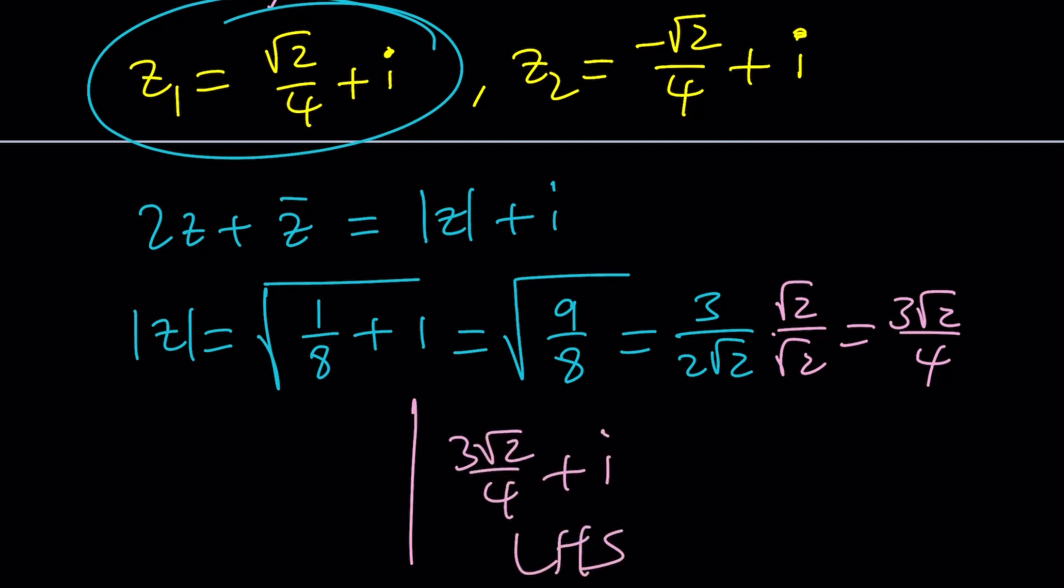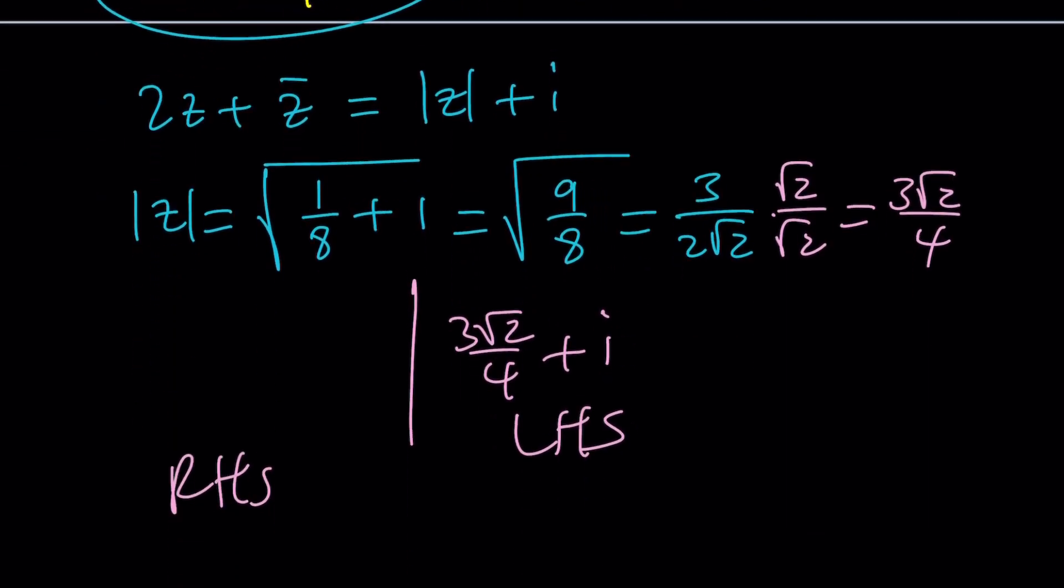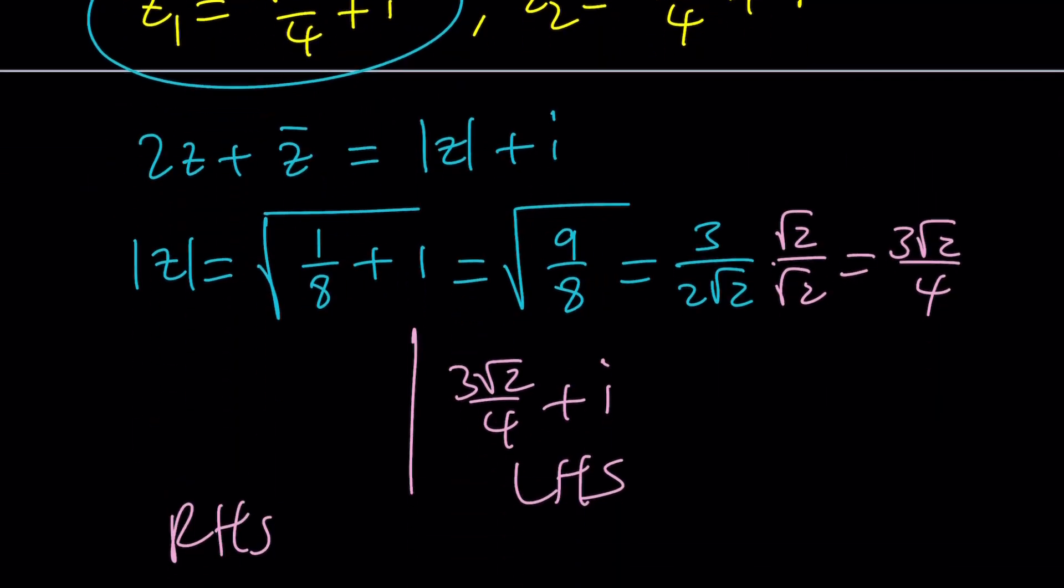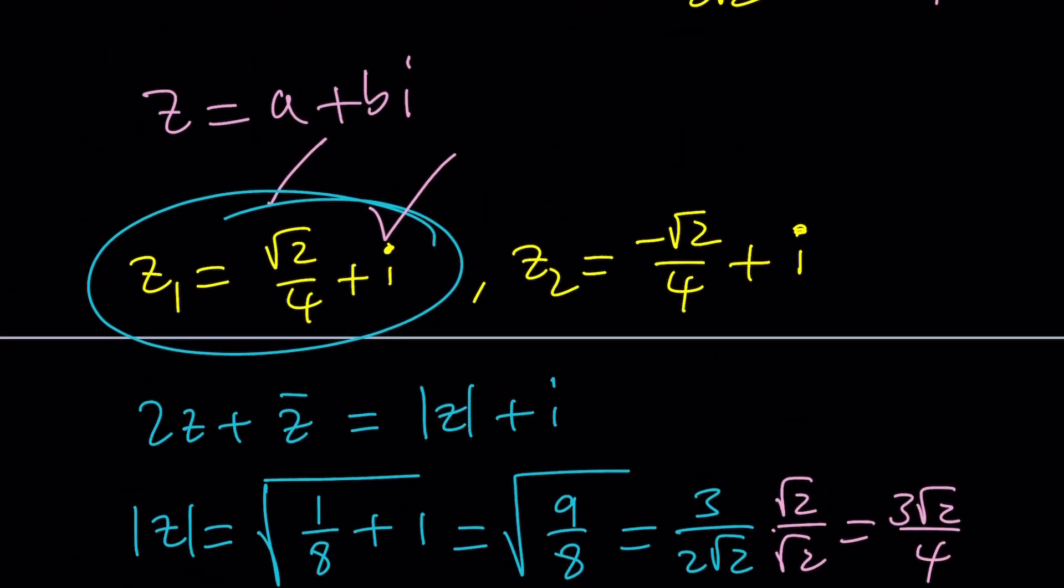On the left hand side let's see what we're getting by finding 2Z plus Z bar. 2Z is 2 times root 2 over 4 plus 2I plus Z bar is root 2 over 4 minus I. If you simplify this it's root 2 over 2 plus root 2 over 4 which is 3 root 2 over 4, and then 2I minus I is just I. As you can see the right hand side equals the left hand side and that verifies one of the solutions. The other one is similar.